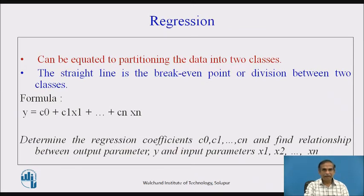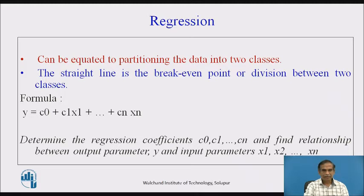Regression can be used to partition the data into two classes. The straight line is the break-even point or the division between the two classes — one class above the line and one class below the line. When we can plot such a line, the regression is of the linear type, called linear regression, given by the formula y = c0 + c1*x1 + ... + cn*xn, where we determine the regression coefficients c0 through cn and find the relationship between output y and inputs x1 through xn.